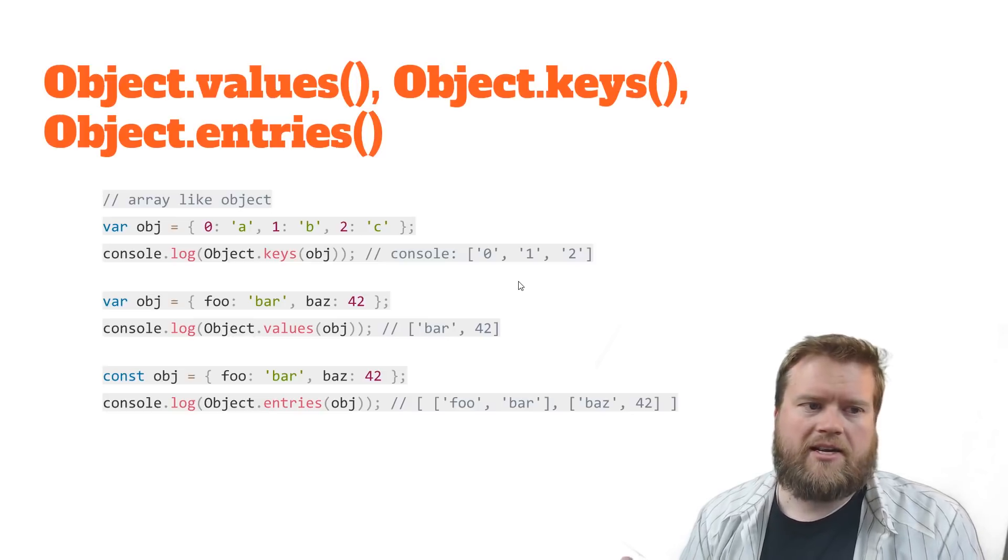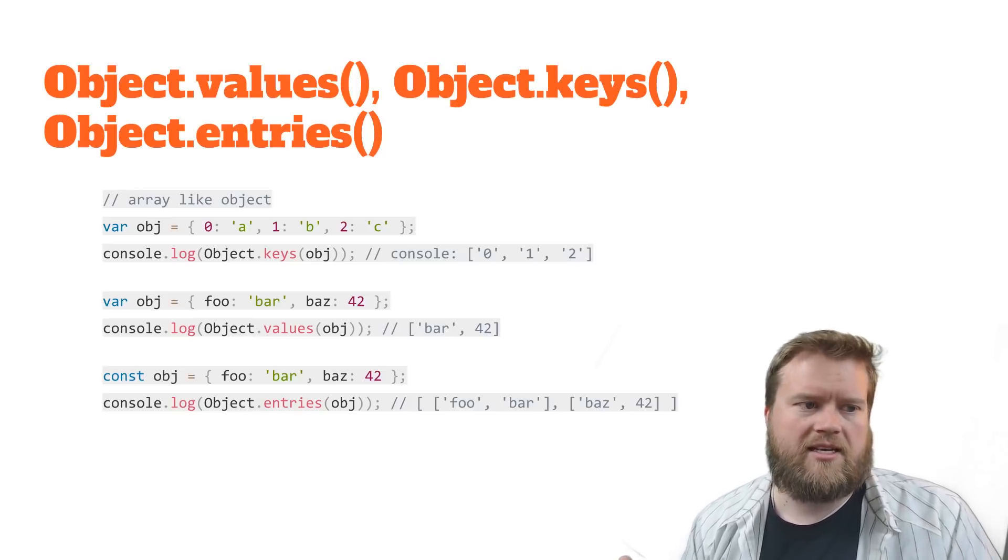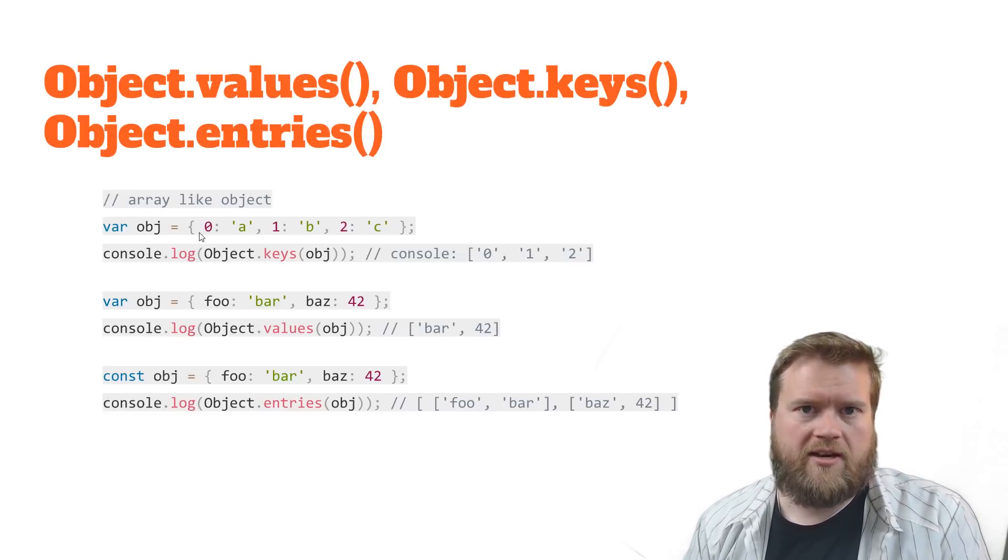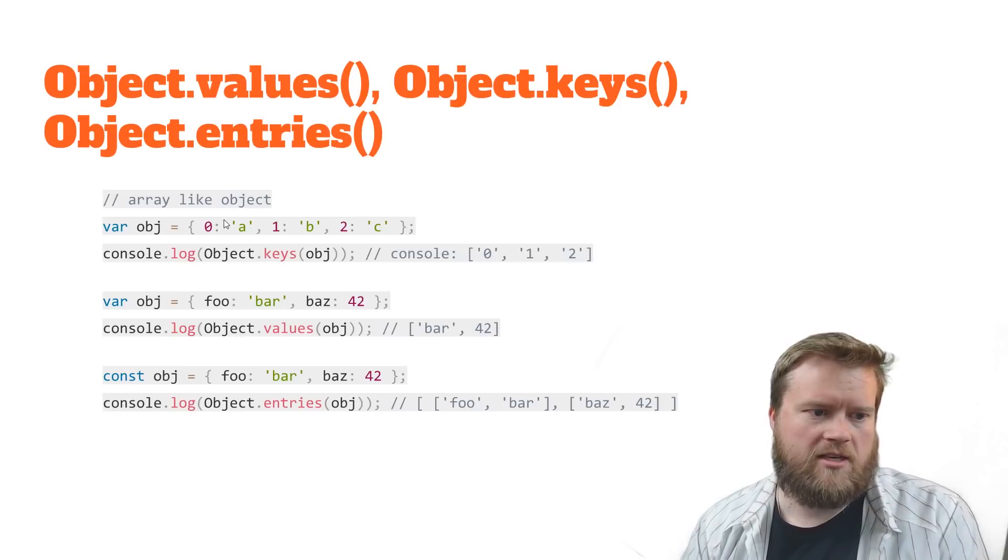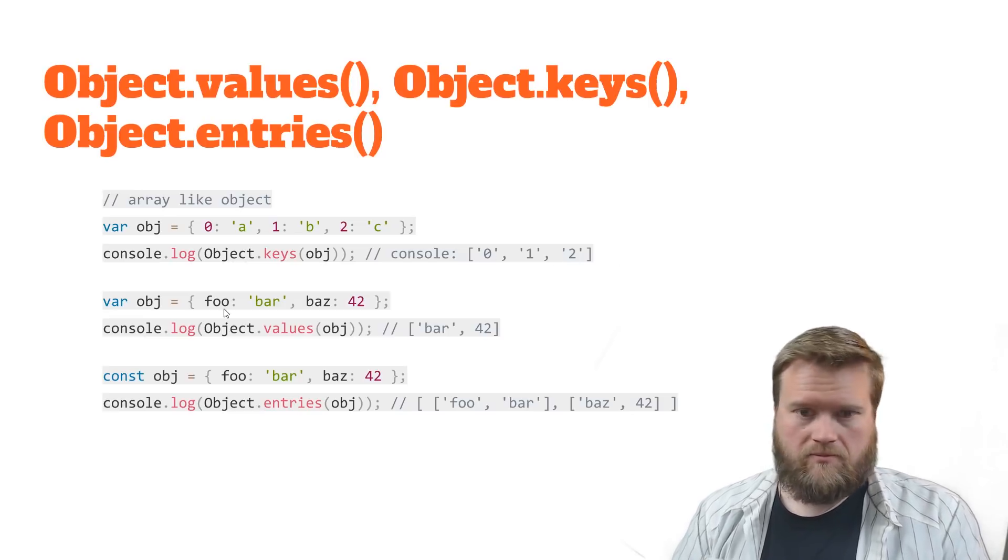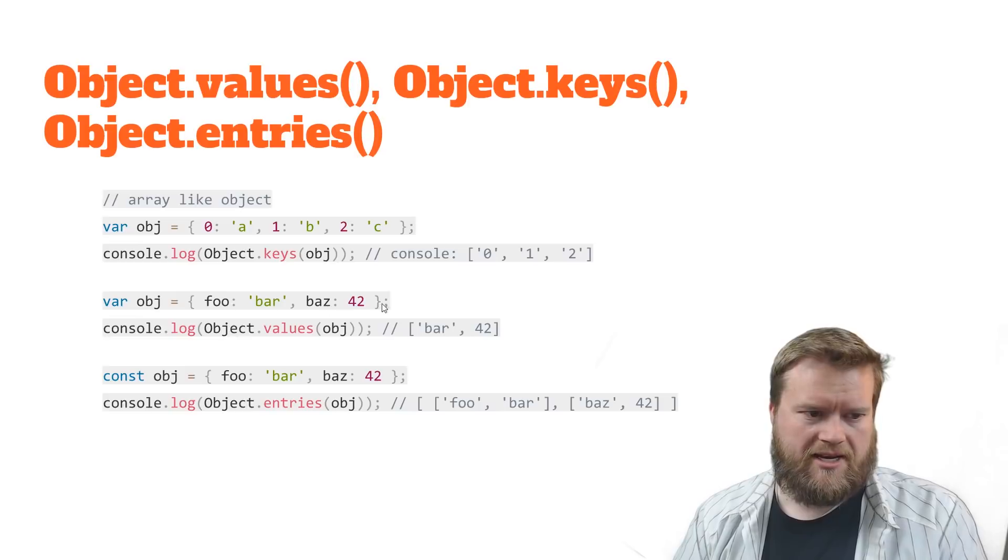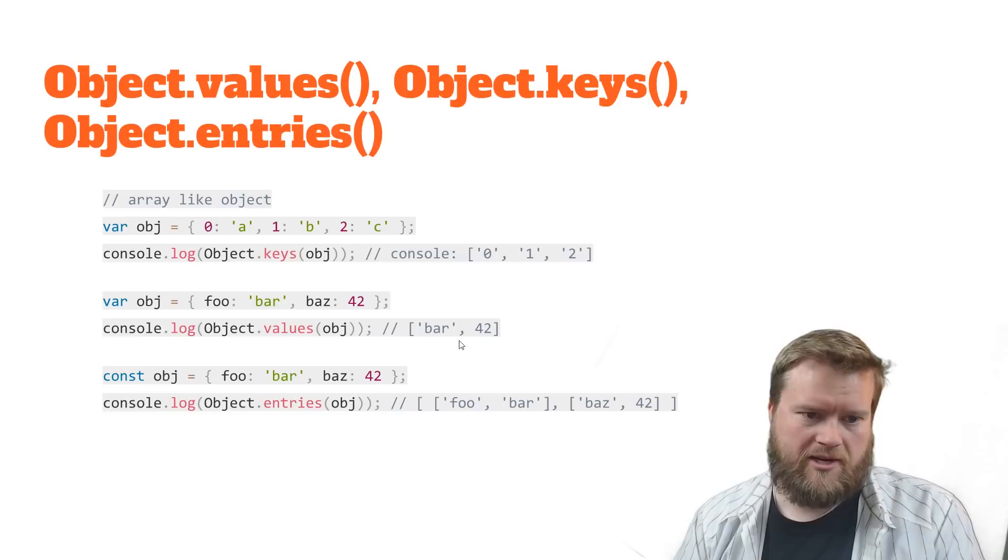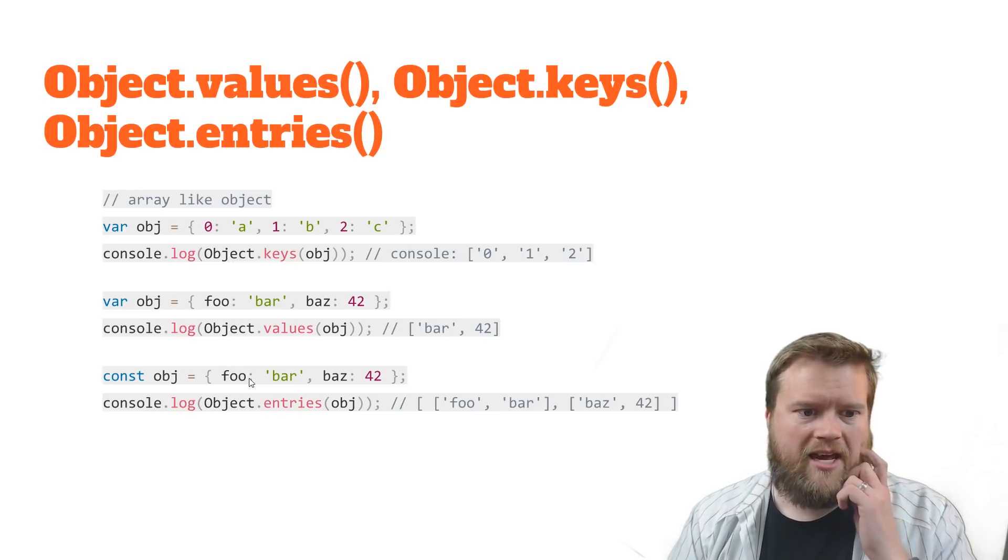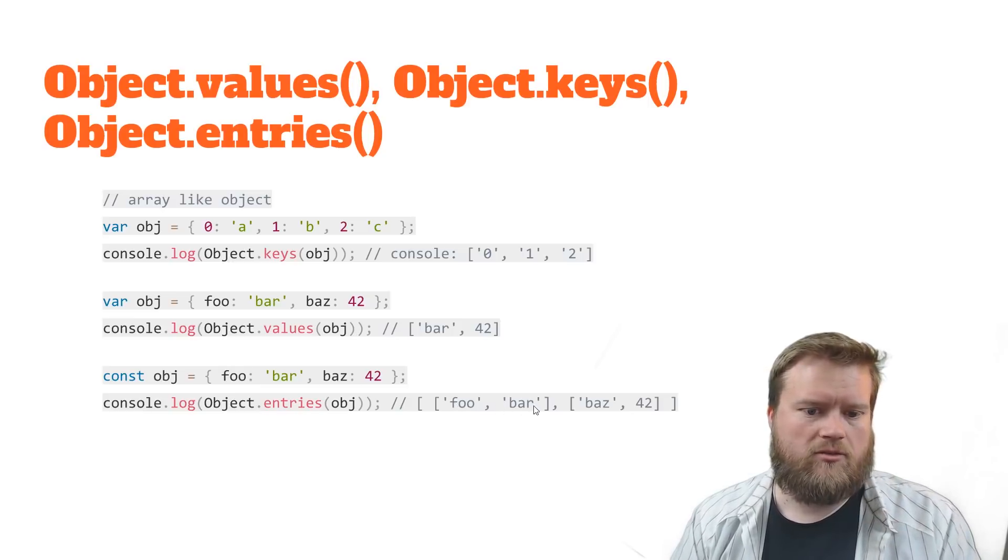And then there's three I'm just going to combine here: object.values, object.keys, and object.entries. So this makes it really easy to grab values out of an object. So like we have an object here, the keys are 0, 1, 2. We can use object.keys and we can get back 0, 1, 2. Our next example, we have foo, bar, baz, 42, you want to get the values, so it returns back the values, which is bar and 42 in an array, by the way. And the last one is we can do entries, and that returns the key and value in an array.